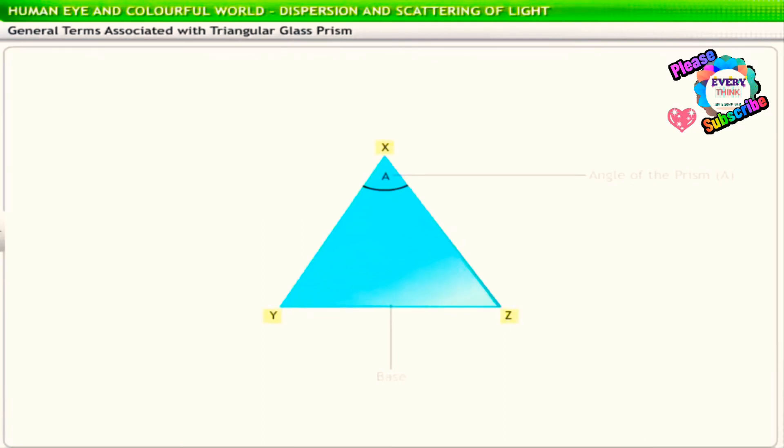Consider XYZ, the cross section of a triangular glass prism. When a light ray PQ is incident on the face XY of the prism, it refracts at the two refracting surfaces of this prism and follows the path PQRS as shown.